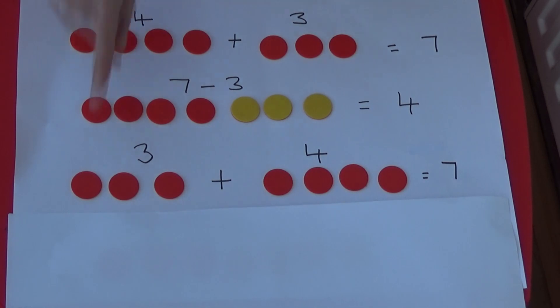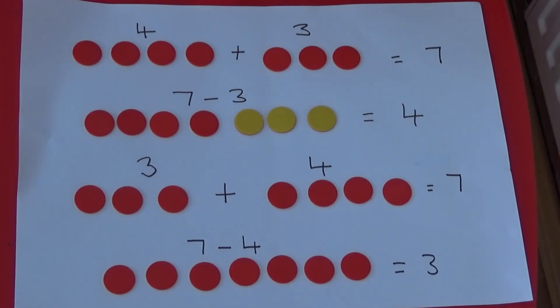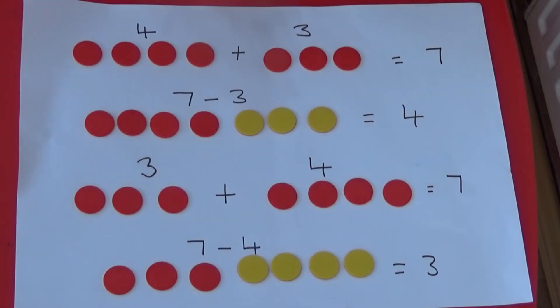We can also show three add four equals seven. And to work out the inverse, seven take away four, I need to turn over four counters. We are then left with three.